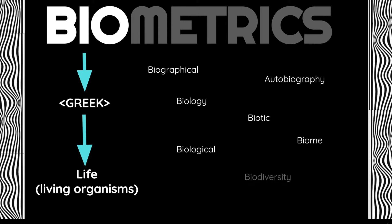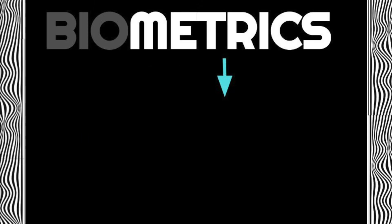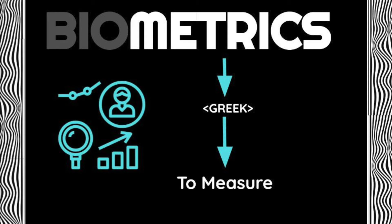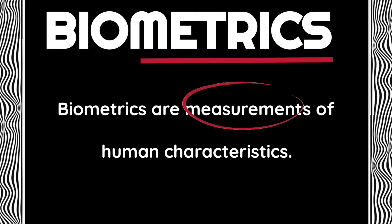Now we'll take a look at the word root metric. Metric is also a Greek root and it means to measure. Measurement can happen in many ways — we can measure length, height, or distance. Here we like to think of measurement as collecting data. When we put these two word roots back together, biometrics are measurements of human characteristics.